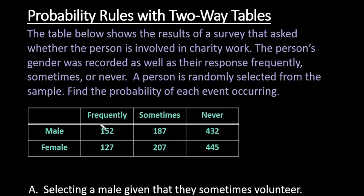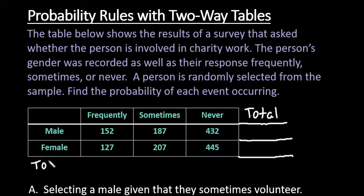The person's gender was recorded as well as their response: frequently, sometimes, or never. A person is randomly selected from the sample and we want to find the probability of each of these events occurring. In order to find probabilities, we need to know the totals, so we're going to have to find both the row totals and the column total.